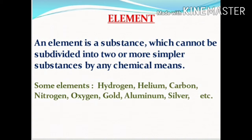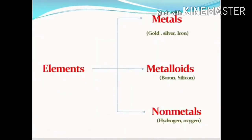There are 118 elements known to us at present. On the basis of chemical and physical properties, the elements are further classified into metals, metalloids, and non-metals. Gold, silver, and iron are common metals. Boron, silicon, and arsenic are commonly recognized as metalloids. Hydrogen and oxygen are non-metals.